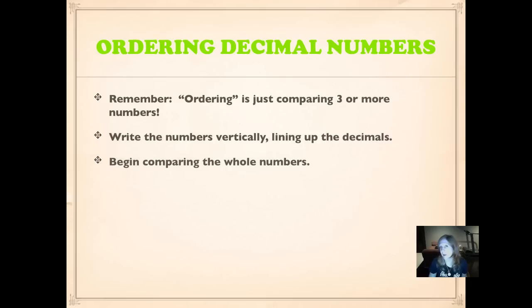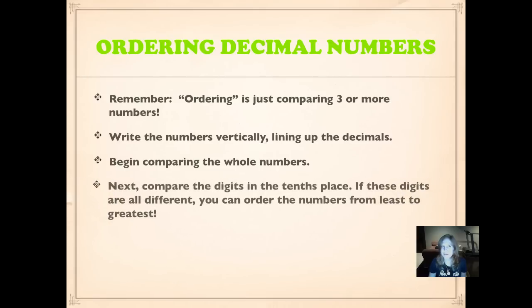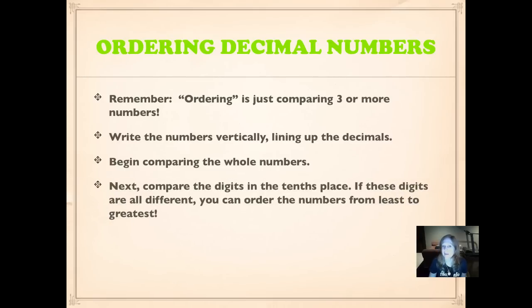Begin by comparing any whole numbers. If the whole numbers are different, then the greatest whole number is a part of the greatest number in all. Just like when we were comparing, we begin comparing decimal numbers in the tenths place. If that's different, then whichever number is greater is part of the greater number. If it's the same, you keep going until you come to a place value position with different digits.